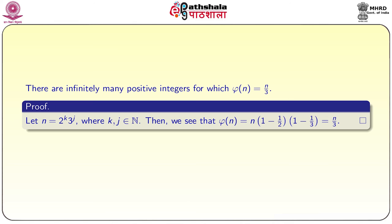This result gives an interesting corollary: there are infinitely many positive integers for which φ(n) = n/3. The proof is simple: if n = 2^k · 3^j where k, j are natural numbers, then φ(n) = n·(1 − 1/2)·(1 − 1/3) = n/3. Since we can vary k and j independently, there are infinitely many such n all satisfying φ(n) = n/3.